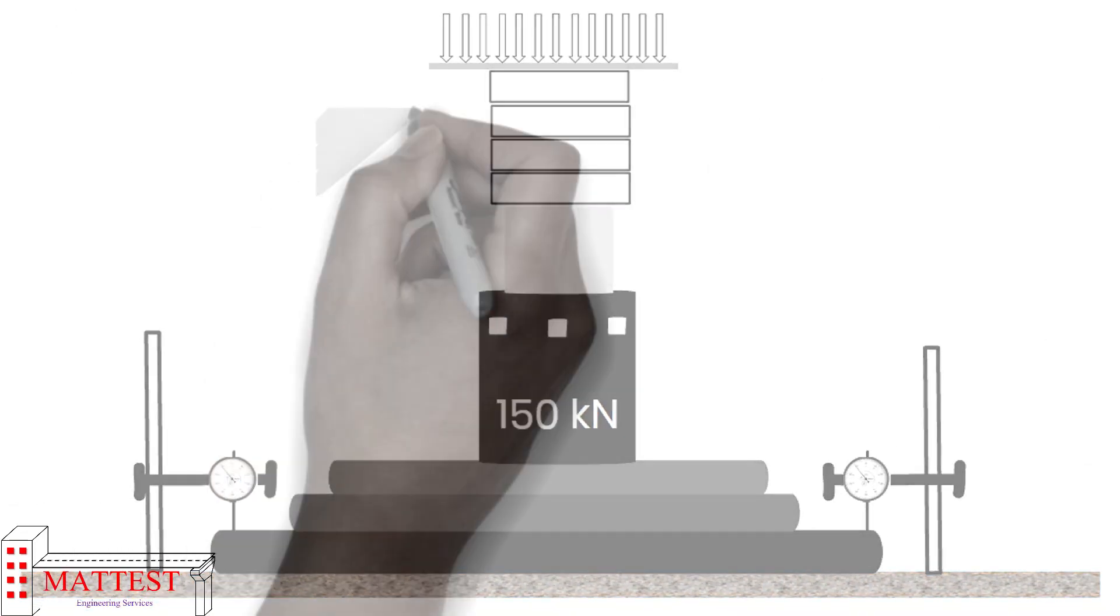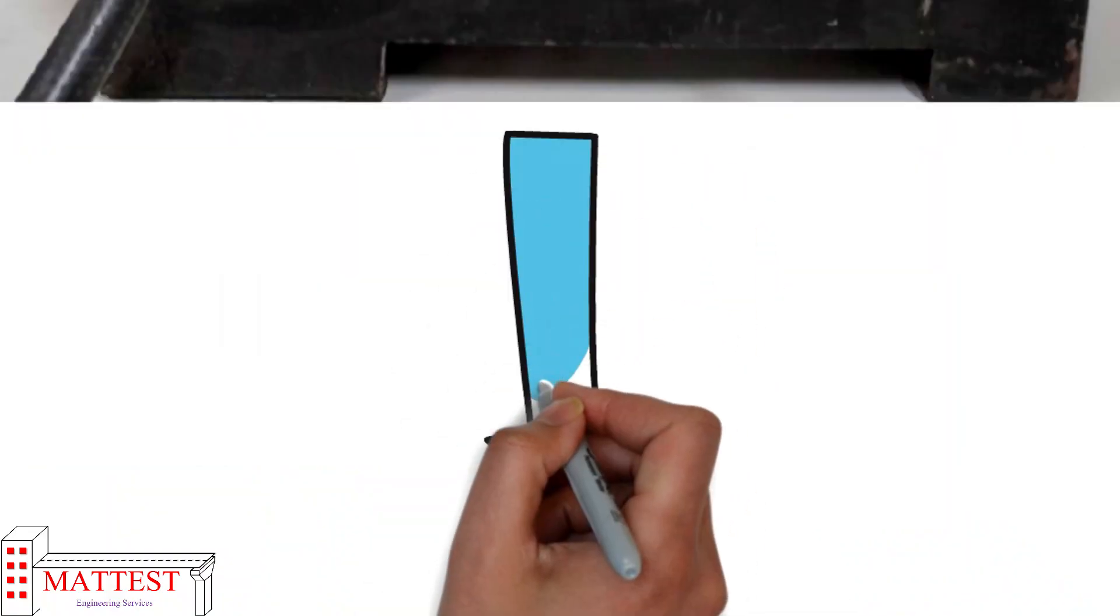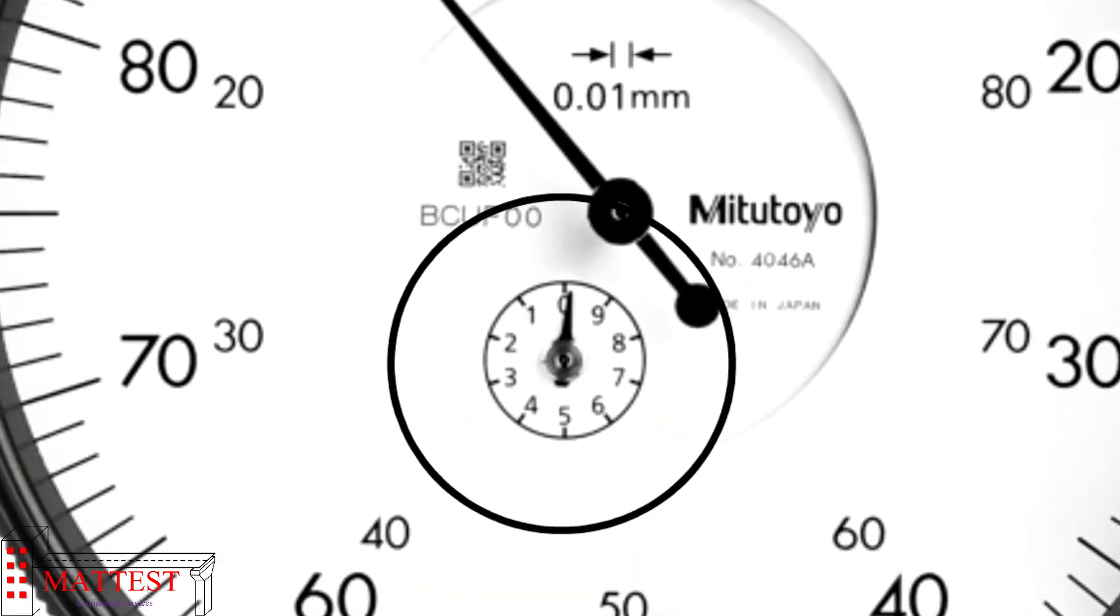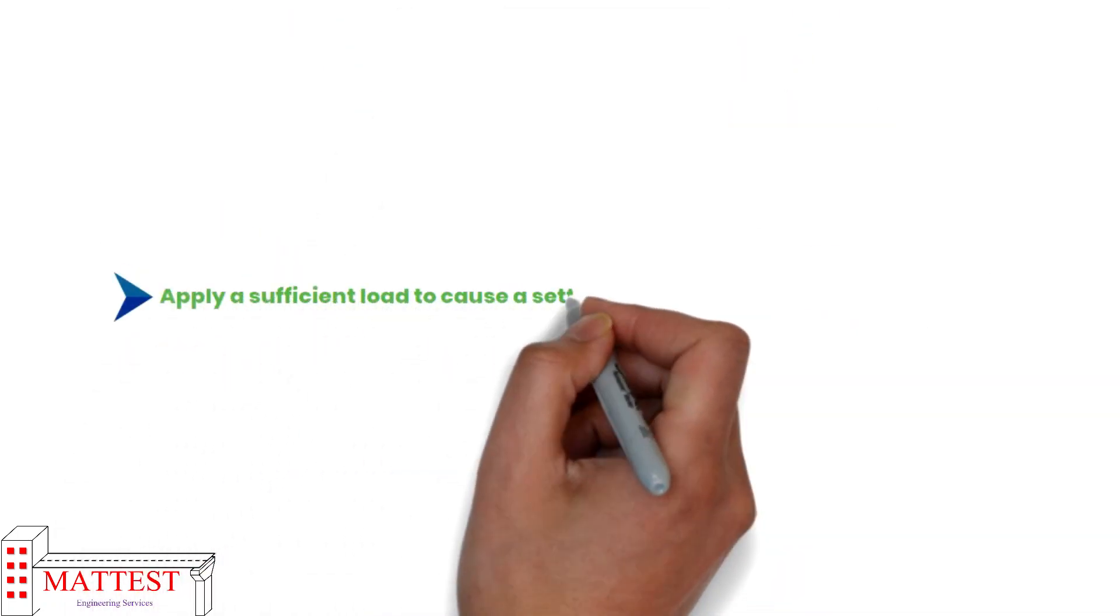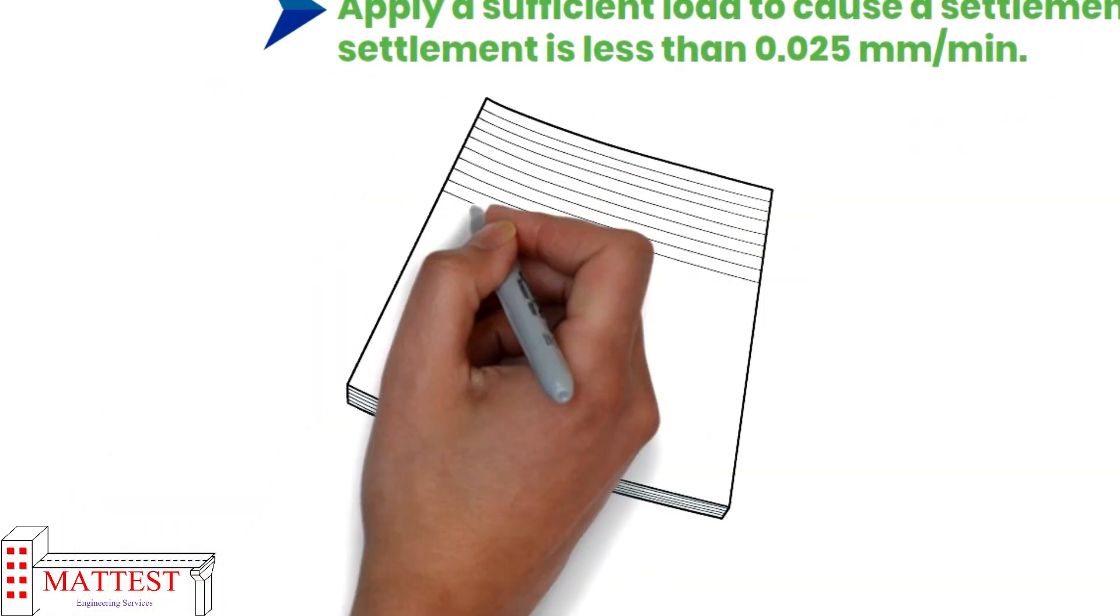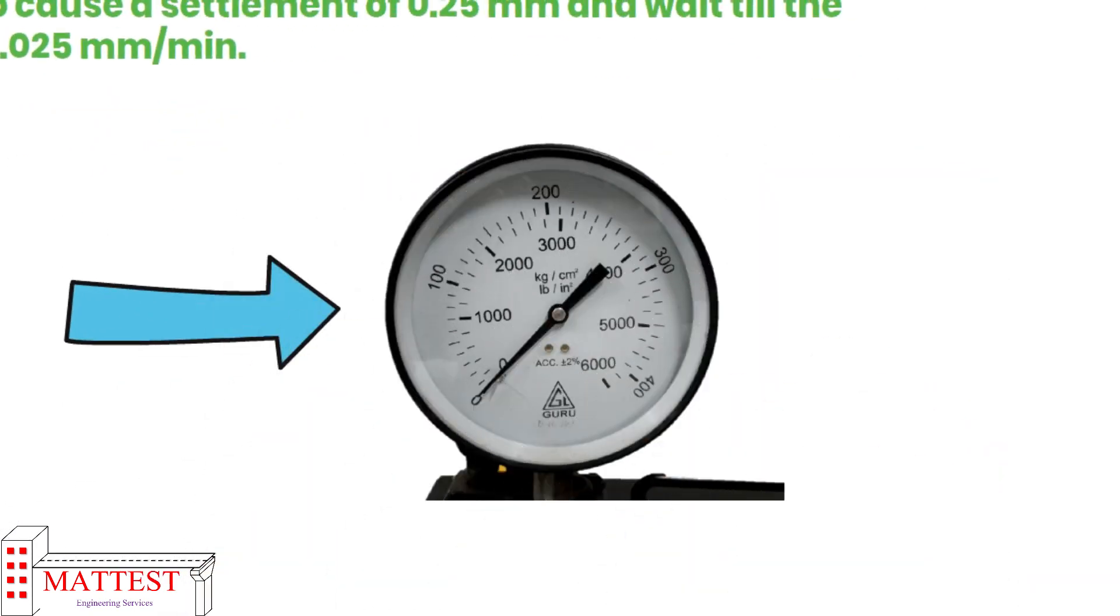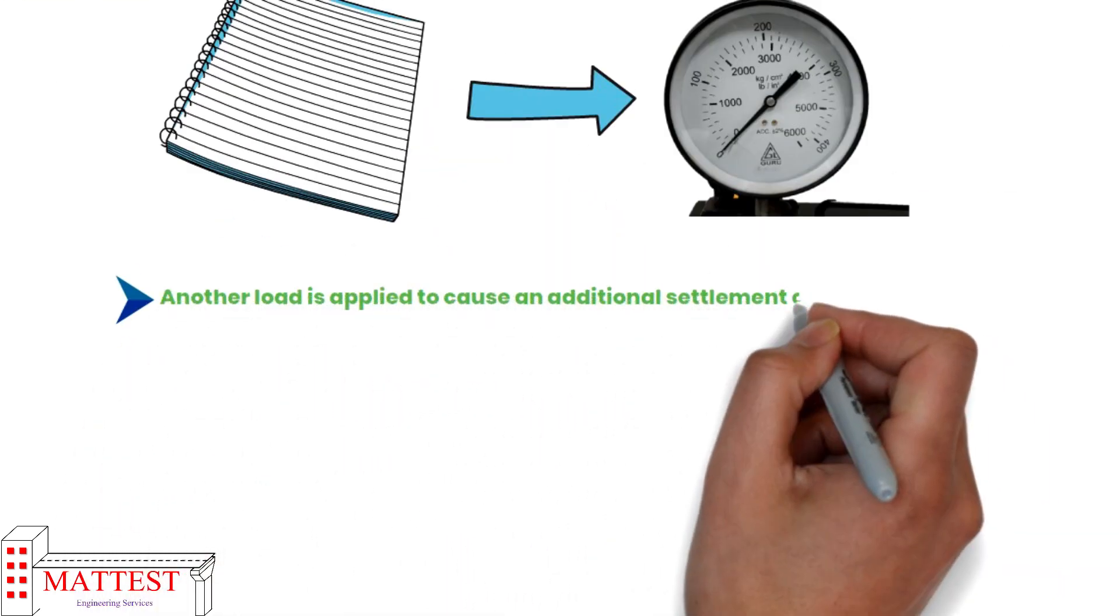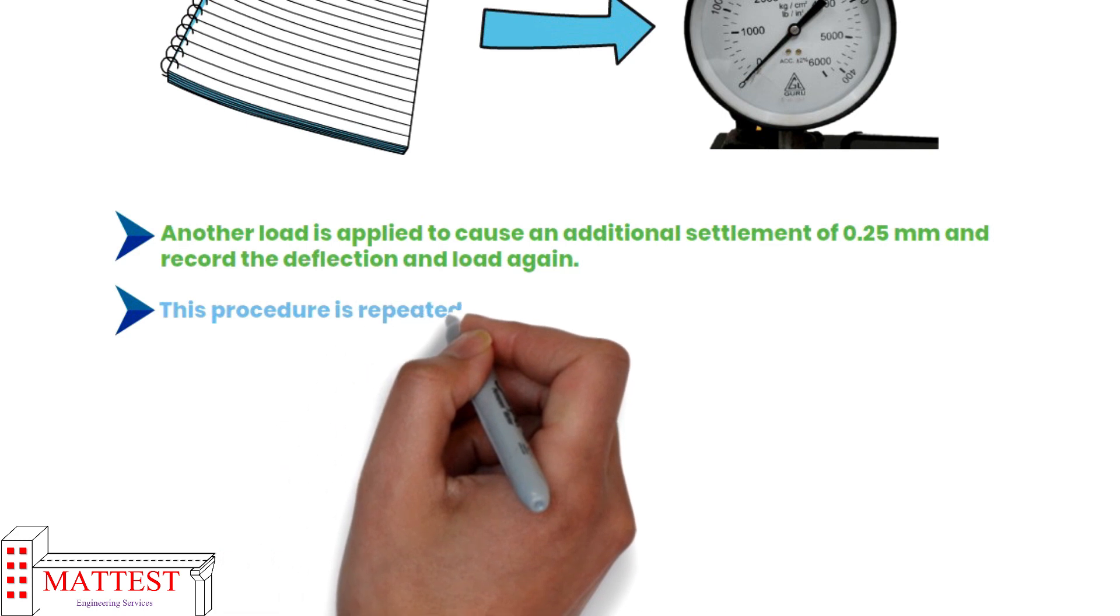After that we will apply a seating load of seven kilo newton per meter square to make the soil even from the surface. Then applied load is raised after a few seconds and readings are set to zero on dial gauges. Then actual loads are applied. Apply a sufficient load to cause a settlement of 0.25 mm and wait till the settlement is less than 0.025 mm per minute. After that, note the readings in three dial gauges and corresponding load in hydraulic pressure dial gauge. Next, another load is applied to cause an additional settlement of 0.25 mm and record the deflection and load again. This procedure is repeated till the settlement is about 1.75 mm or more.